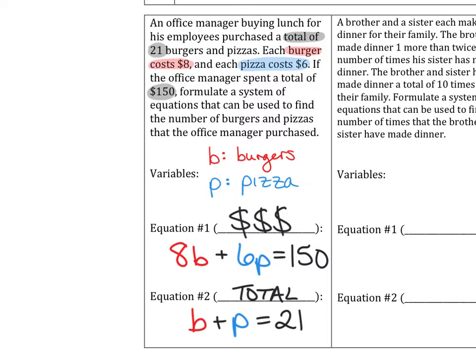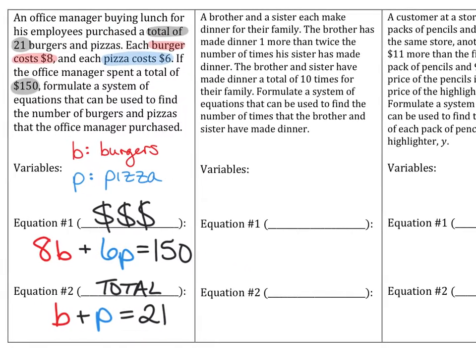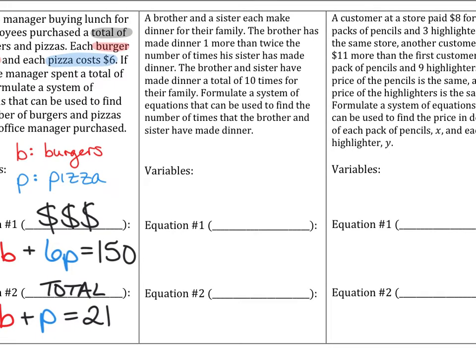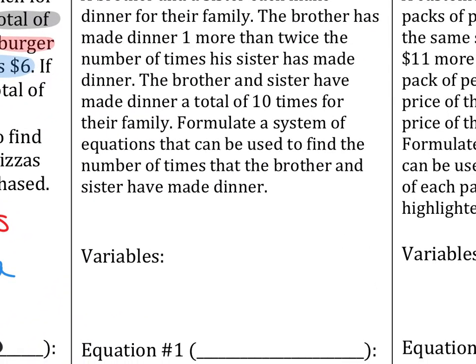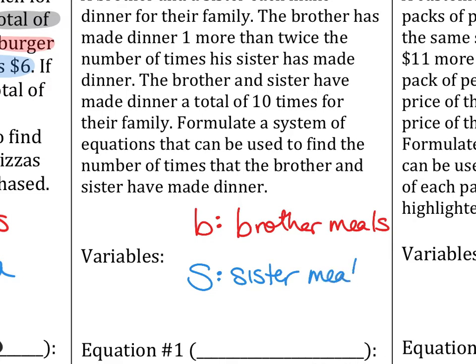Sound good? We're going to do these problems on the front really together today. You'll do your independent trials on your homework or whatever. But in the center, of course, it says a brother and sister make dinner, each make dinner for their family. That seems fair. The brother has made dinner one more than twice the number of times his sister has made dinner. The brother and sister have made dinner a total of 10 times for their family. Formulate a system of equations that can be used to find the number of times that the brother and sister have made dinner. What variables do you all want to use today? B for what? Brother.